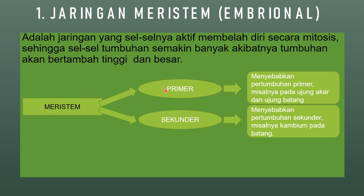Jaringan meristem dibagi menjadi dua. Yang pertama, meristem primer merupakan jaringan yang menyebabkan pertumbuhan primer, misalnya pada ujung akar dan ujung batang — pertumbuhan yang menyebabkan batang menjadi bertambah tinggi atau akar menjadi bertambah panjang. Meristem sekunder menyebabkan terjadinya pertumbuhan sekunder, misalnya pada kambium yang terdapat pada batang, yaitu pertumbuhan yang menyebabkan tumbuhan menjadi bertambah besar.